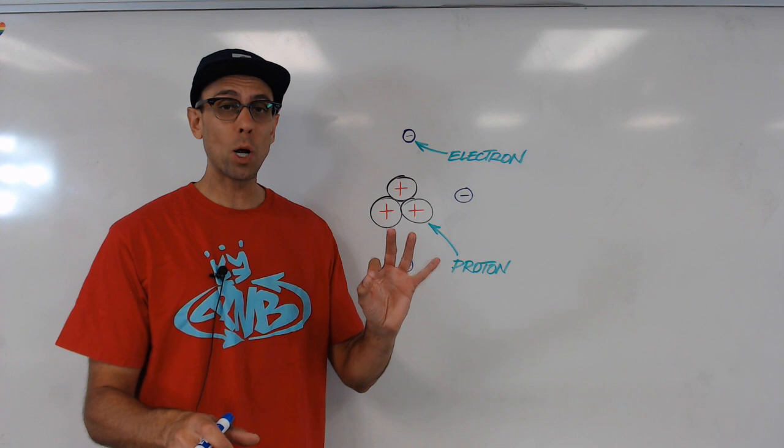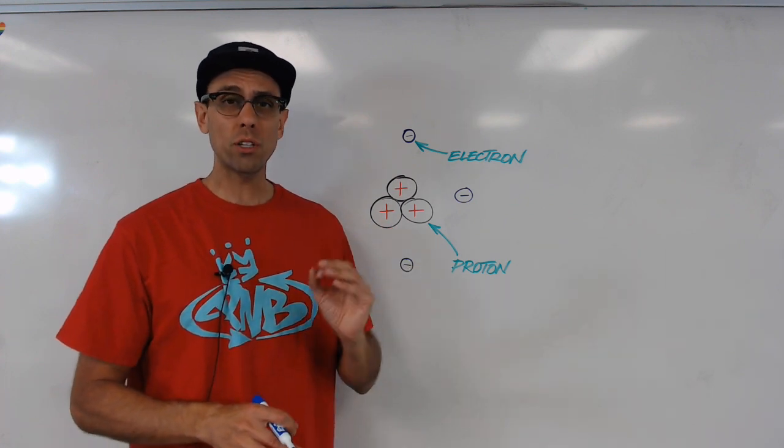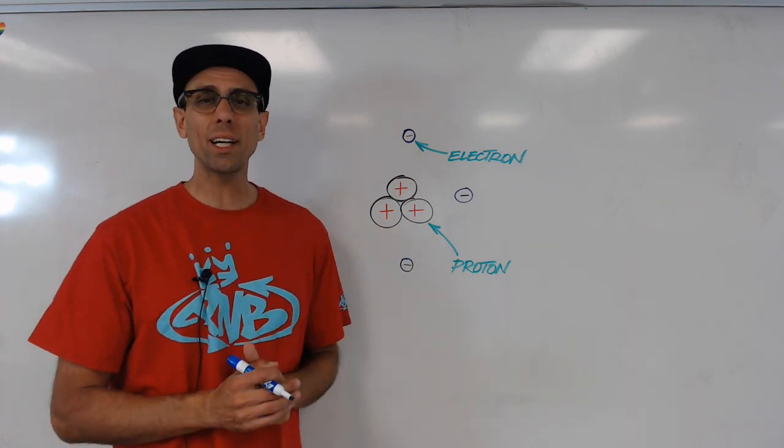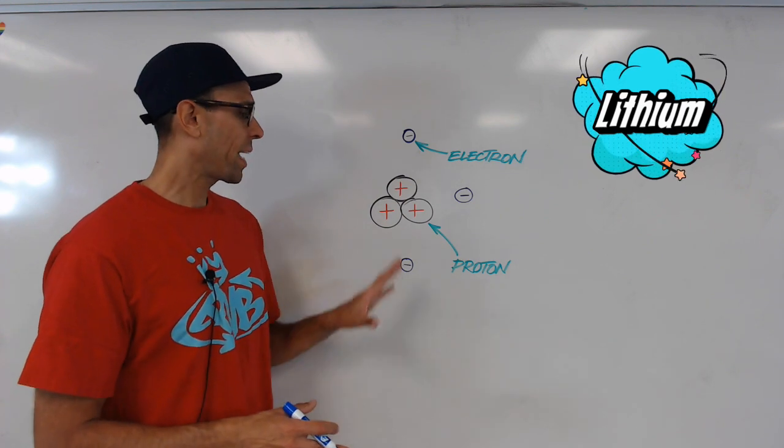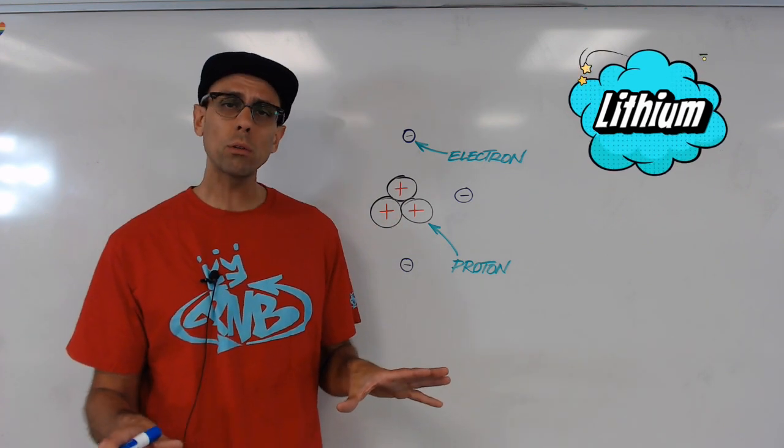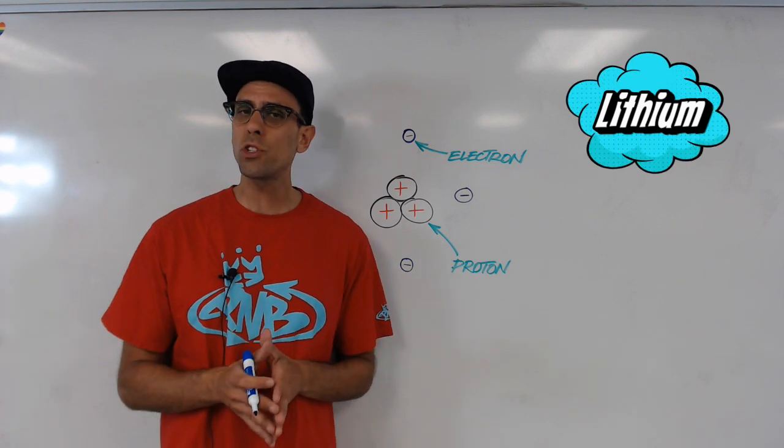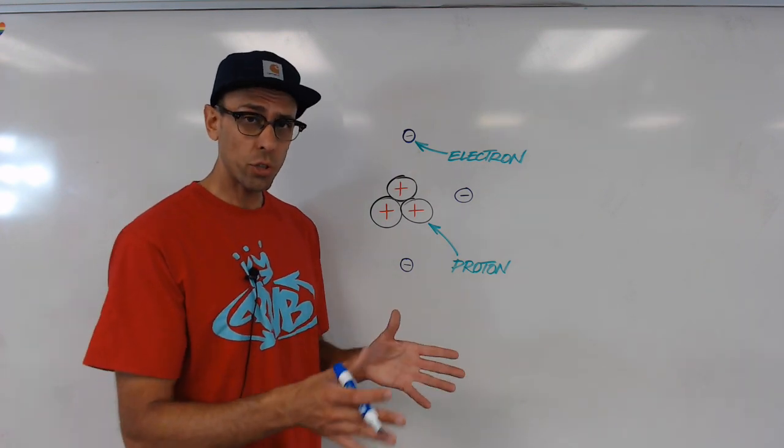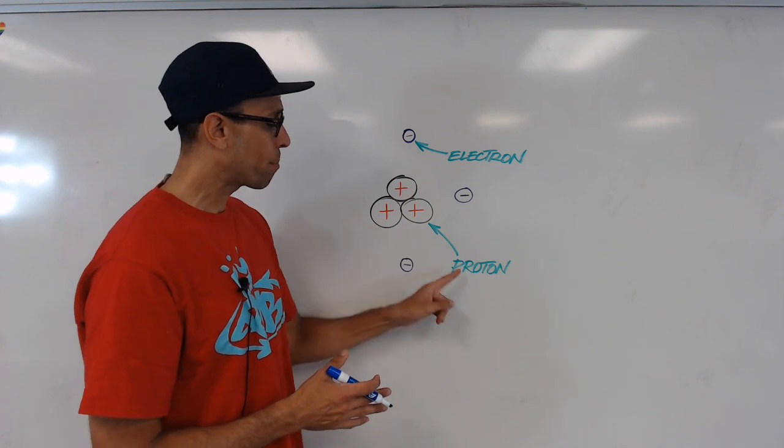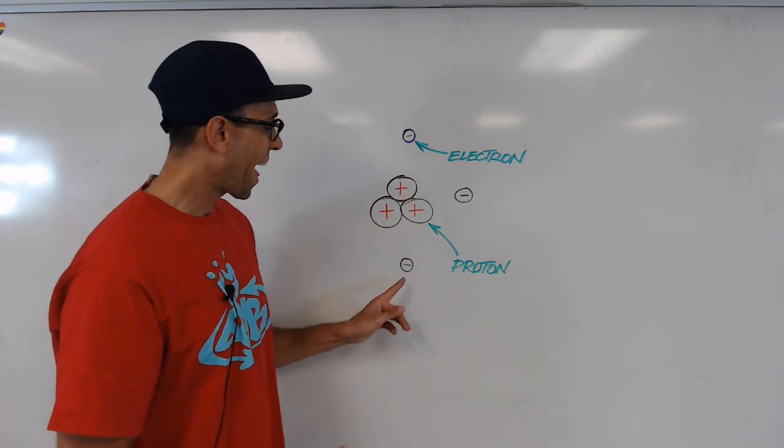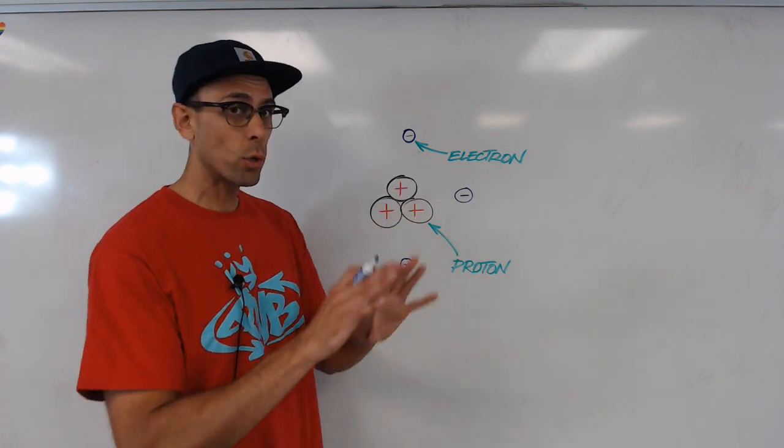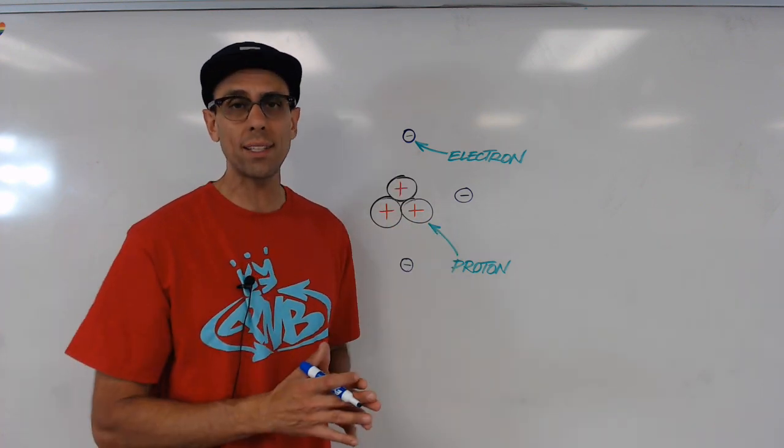All right, I think we would all benefit from a quick recap of atomic structure basics. So let's take a look at this simplified lithium atom. Now I say simplified because it's drawn without any neutrons in the nucleus, and that's because they're not essential to this particular discussion we're having. Now what you'll notice is that lithium has three protons in the nucleus, and they're positively charged, and three electrons outside of the nucleus, and each of those has a negative charge.